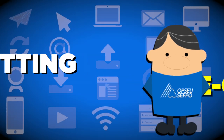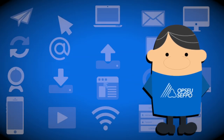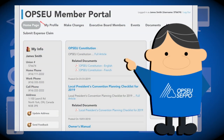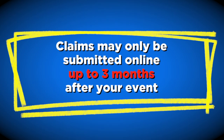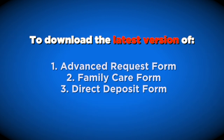You can submit an electronic expense claim to the members portal by entering the Submit Expense Claims page and then clicking on the Add New Claim tab. Please note that claims may only be submitted online up to three months after your event. To download the latest version of the Advanced Request Form, Family Care Form, or Direct Deposit Form,